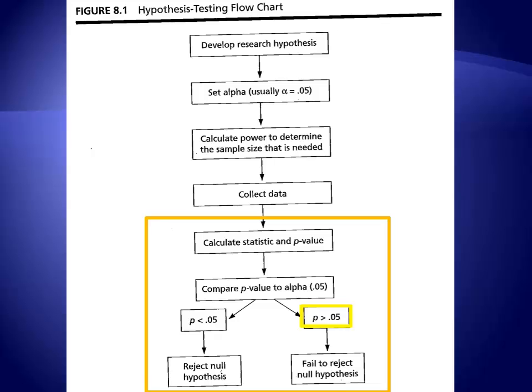On the other hand, if your p-value is equal to or greater than 0.05, then there is a greater than 5% probability that you would find a test statistic that size. You would therefore fail to reject the null hypothesis and conclude that, based on your current data, you cannot state that a relationship exists between the variables in your model.